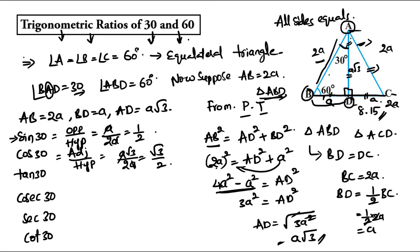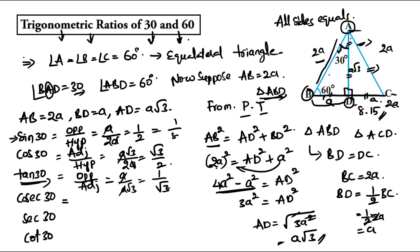For tan 30: opposite divided by adjacent = a / a√3 = 1/√3. Cosec 30 is the reciprocal of sin 30, so cosec 30 = 2. Sec 30 is the reciprocal of cos 30, so sec 30 = 2/√3. Cot 30 is the reciprocal of tan 30, so cot 30 = √3. These are the values of sin, cos, tan, cosec, sec, and cot for 30°.